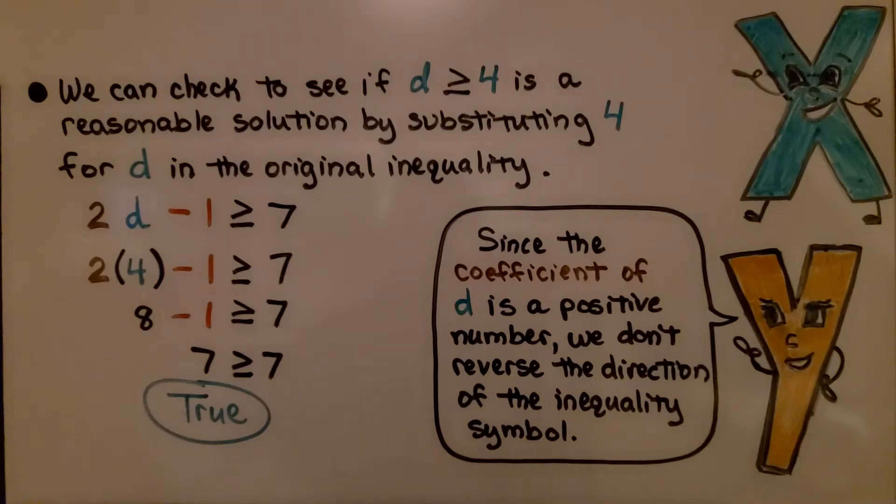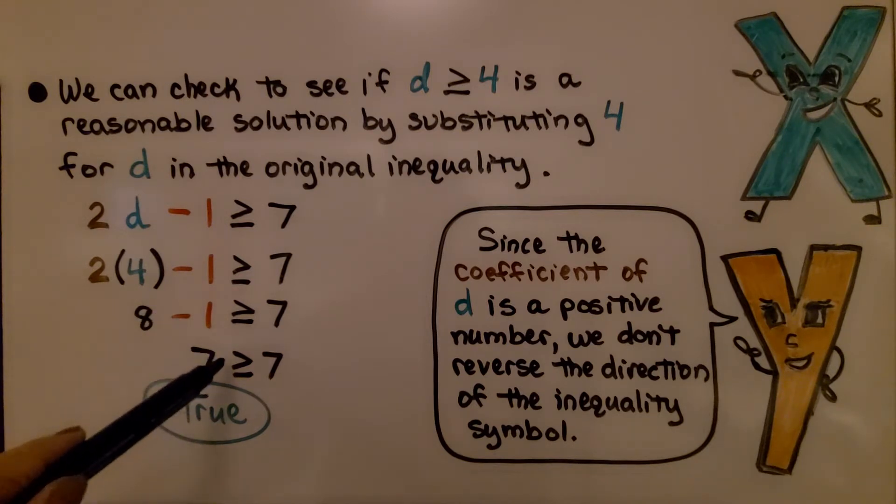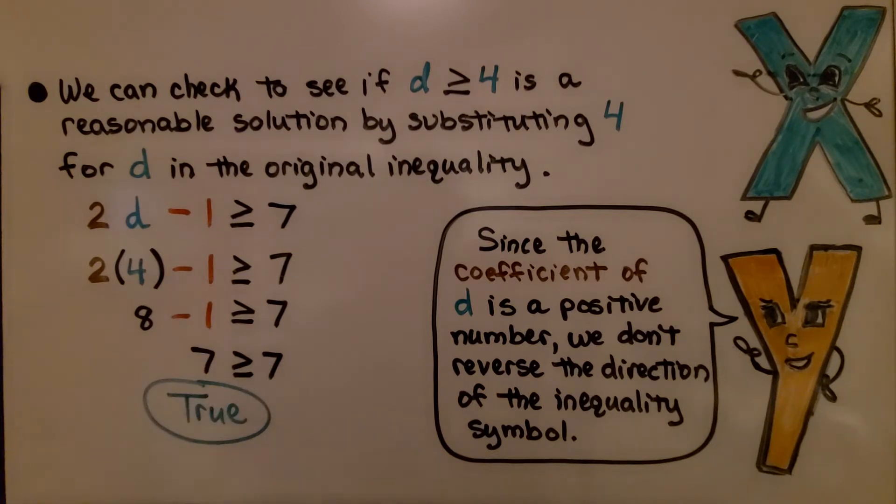We can check to see if d is greater than or equal to four is a reasonable solution by substituting the four for d in the original inequality. Instead of 2d, we have two times four, that's eight. Now we subtract one, we get a seven. Seven is greater than or equal to seven. Yeah, it's equal to seven. So that's true.